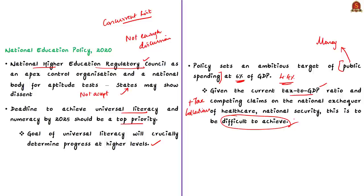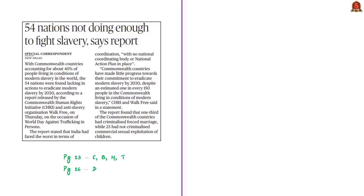When there is public and political will, resources find their way from both public and private sources. Now that the wish list is available in the policy, public and political will is necessary to proceed and make use of the right recipe from NEP 2020. These are some of the important opinions given by authors on features of NEP 2020. Now let's move on to the analysis of the next news article.